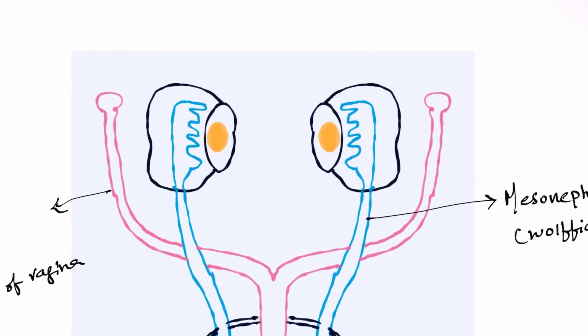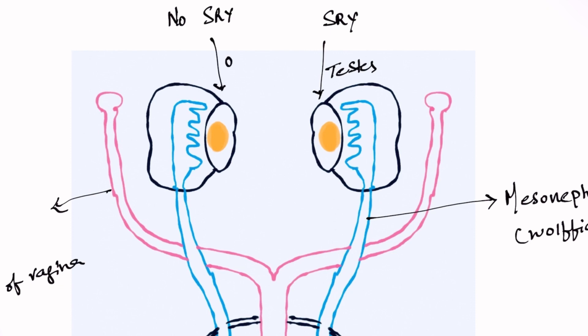In summary: in males, the Y chromosome is present, the SRY gene is present, and the testis-determining factor is present, so the indifferent gonad develops into testes. In females, there is no SRY gene, so the indifferent gonad simply develops into ovaries. That is how simple it is. Thank you.